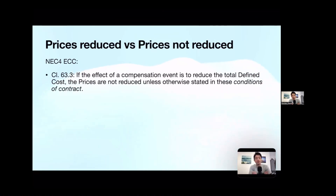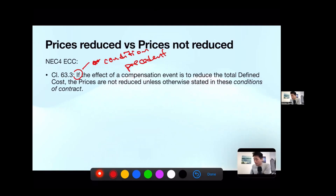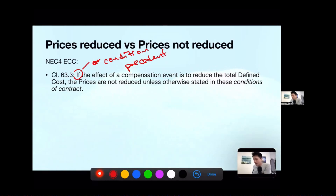Let me go to clause 63.3. It says: if the effect of a compensation event is to reduce the total defined cost, the prices are not reduced unless otherwise stated in these conditions of contract. The word 'if' here is a condition precedent, meaning if the following phrase applies, then you read on. So: is it a compensation event? Yes. Does it reduce the total defined cost? If it does, then you read on — and the effect is the prices are not reduced.